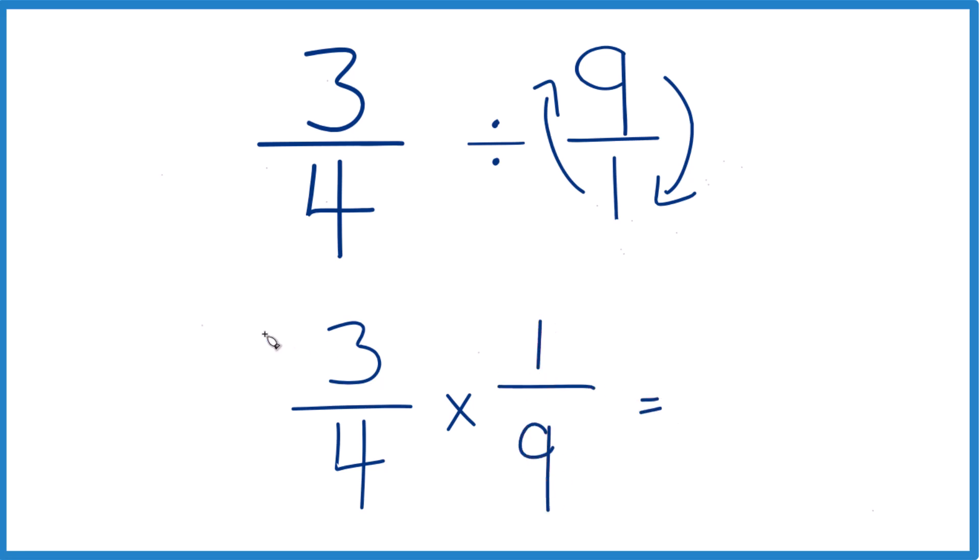Now with fractions, we just multiply the numerators. 3 times 1, that's 3, and the denominators. 4 times 9, that would be 36.